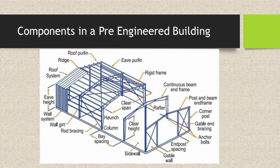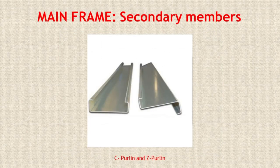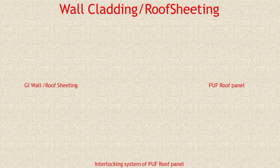In the components of a pre-engineered building, you can see roof purlins, ridges, and roof systems. There are also wall girts, which are similar to purlins but are horizontal members used on walls. The vertical sections are known as columns, whereas the horizontal sections are called rafters. The secondary members are C-purlins and Z-purlins, which support the sheeting or roofing. Wall cladding uses GI corrugated wall and roof sheeting.